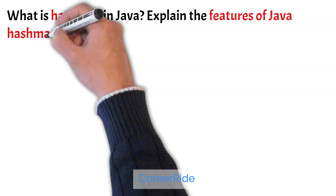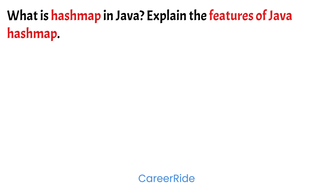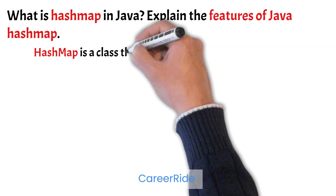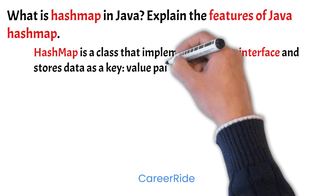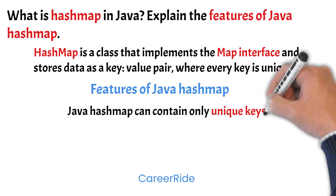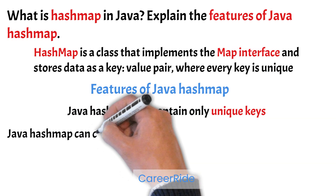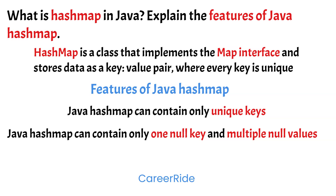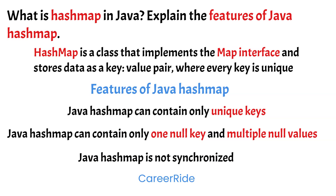What is HashMap in Java? Explain the features of Java HashMap. In Java, HashMap is a class that implements the Map interface and stores data as key-value pairs, where every key is unique. The HashMap class provides various methods to perform operations on HashMap such as adding an element, modifying an element, accessing an element, and many more. The features of Java HashMap: Java HashMap can contain only unique keys; it can contain only one null key and multiple null values; and Java HashMap is not synchronized.